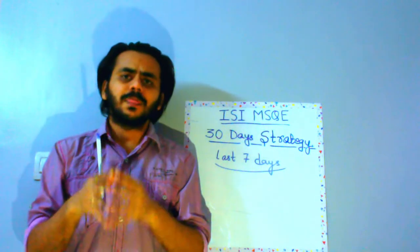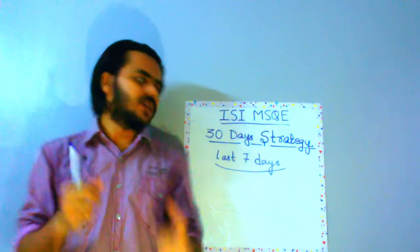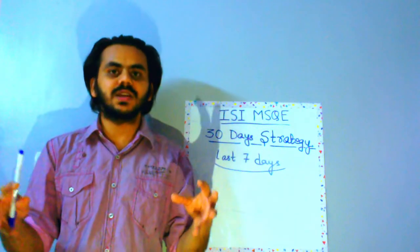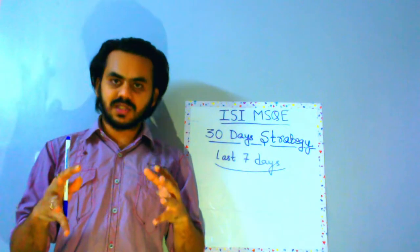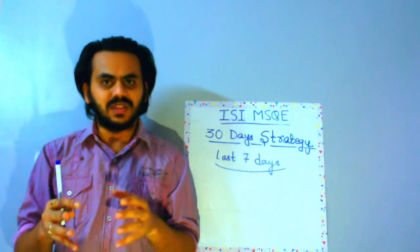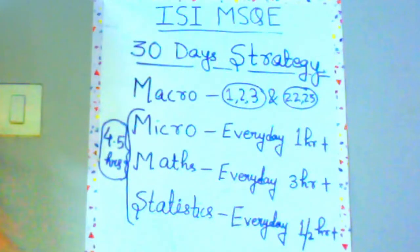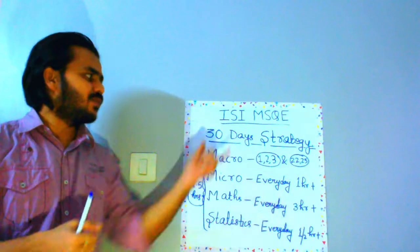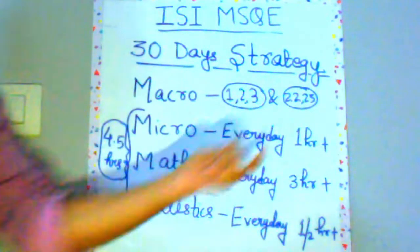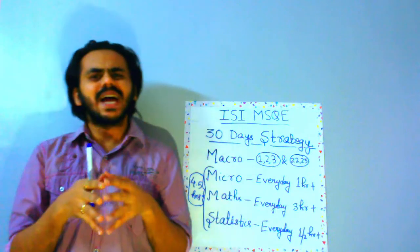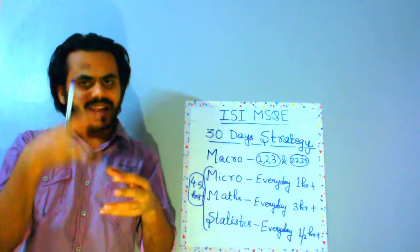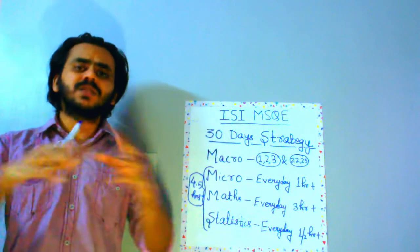After you have made a mental map, that is all the revision you need. So in the last 7 days, your task is to summarize all subjects and topics and not practice new questions. Now let's look at the remaining 23 days. You should give the first 3 days to macroeconomics and the last 2 days to macroeconomics, because macroeconomics has a story aspect to it.